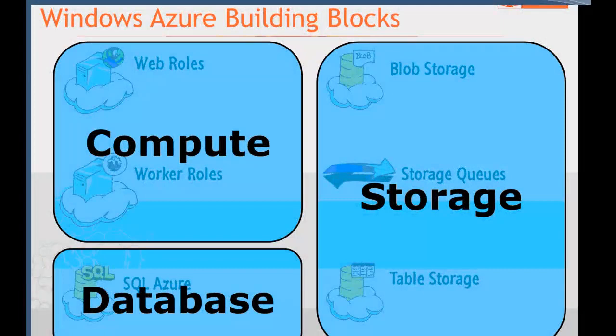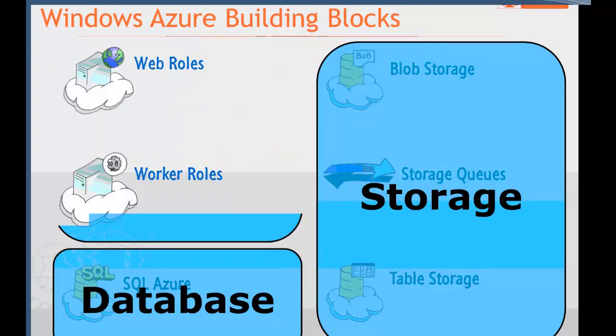Compute comes in two flavors, what we call roles: a web role and a worker role. There are some other variations today, but we'll focus on those. A web role is really a virtual machine for hosting IIS-based applications. For those from an Apache world, IIS is really just our version of Apache — a web server you can throw applications into. The web roles come with that application server already configured and running; all we have to do is have our apps installed into it.